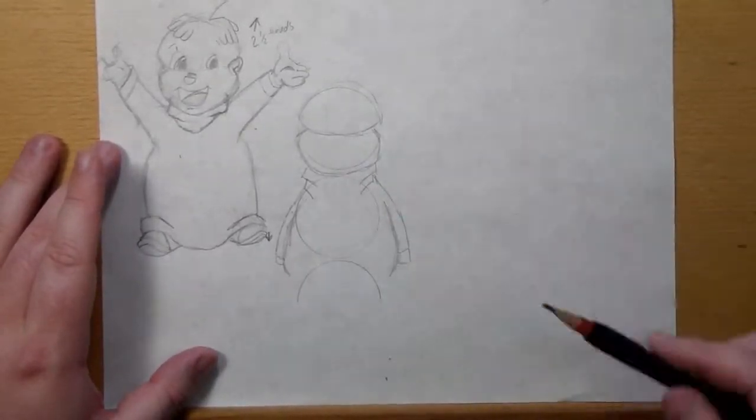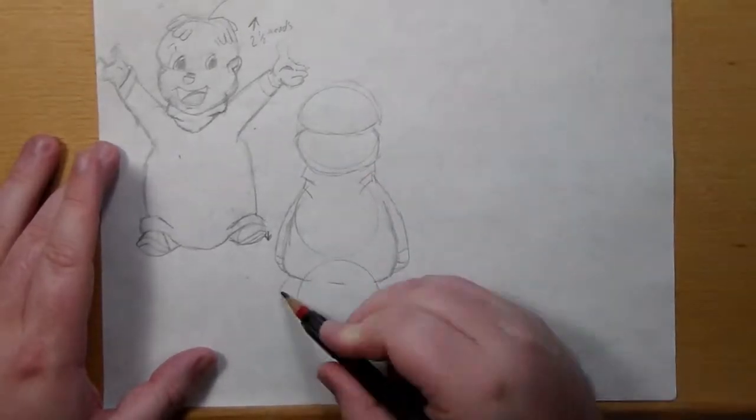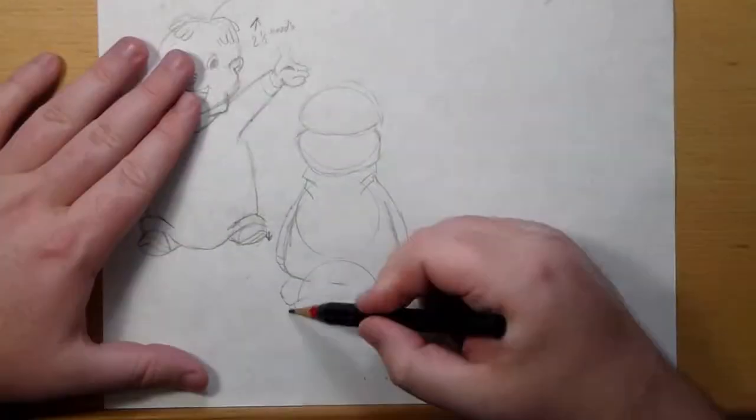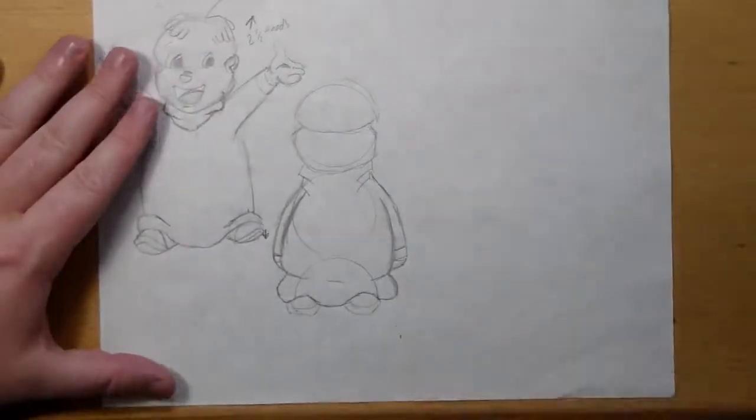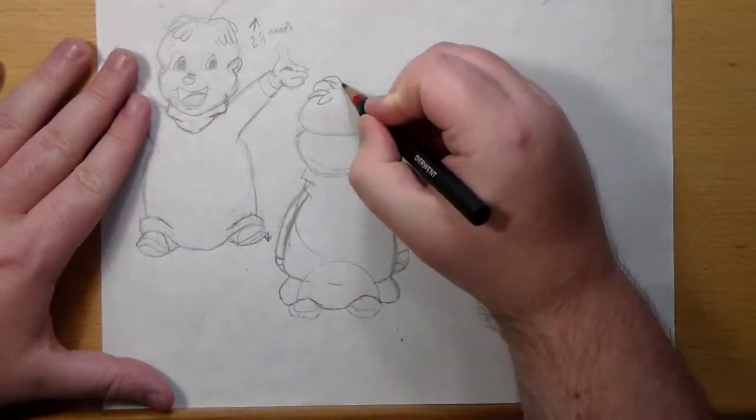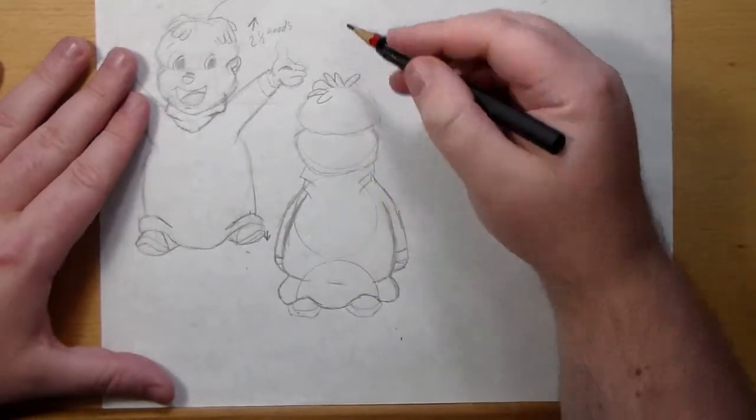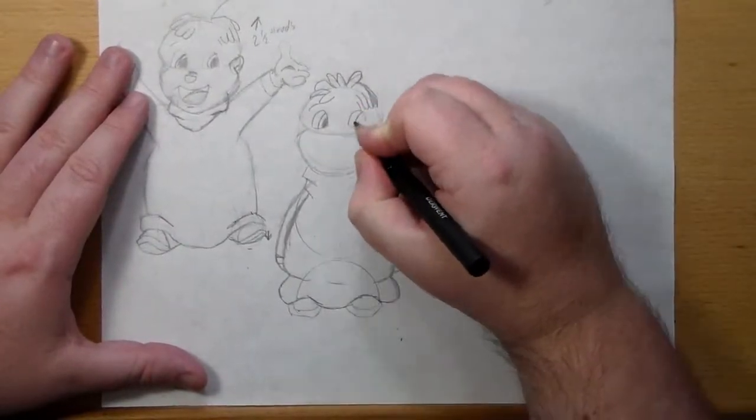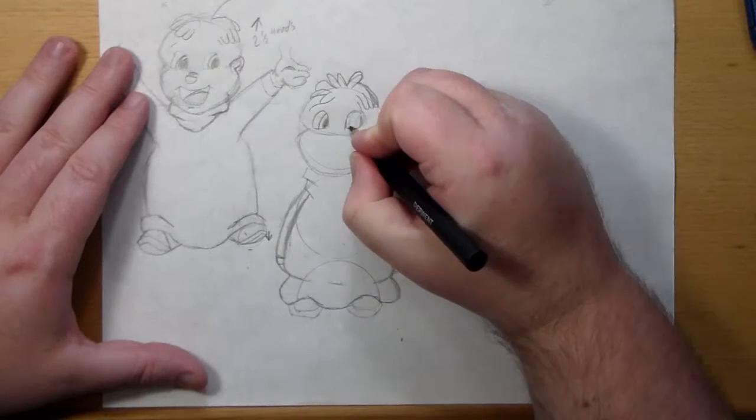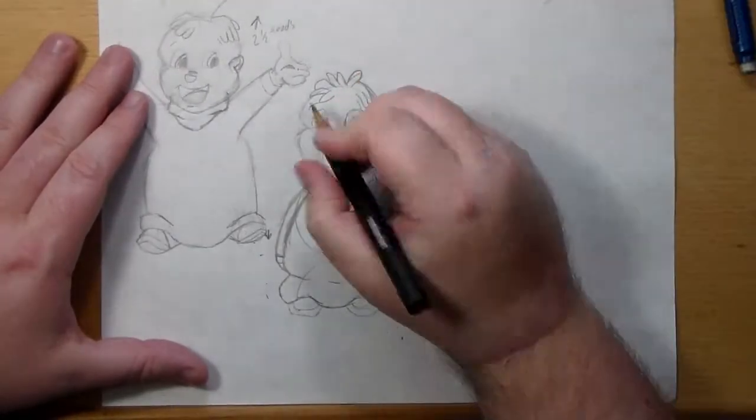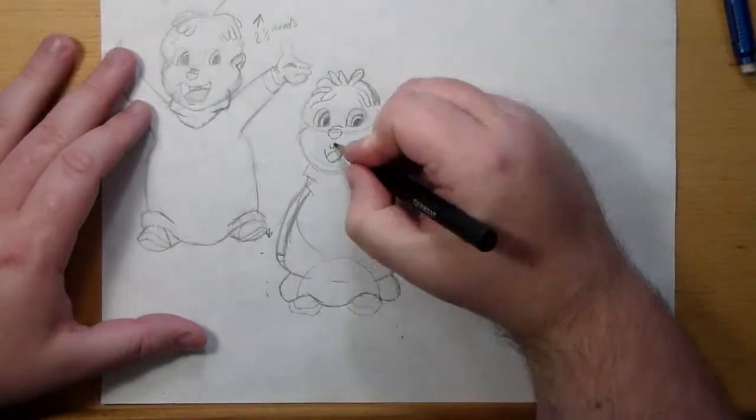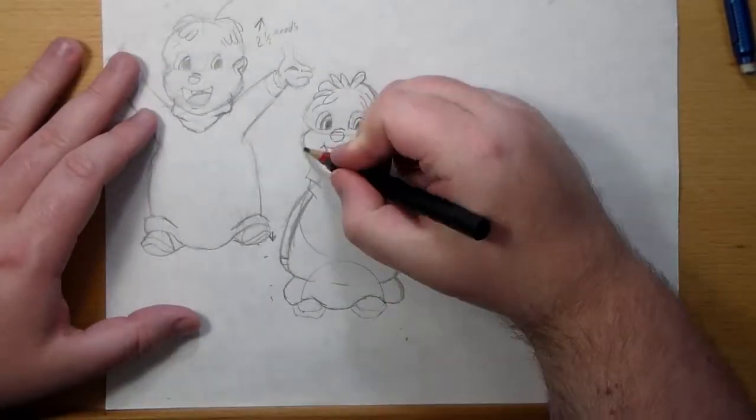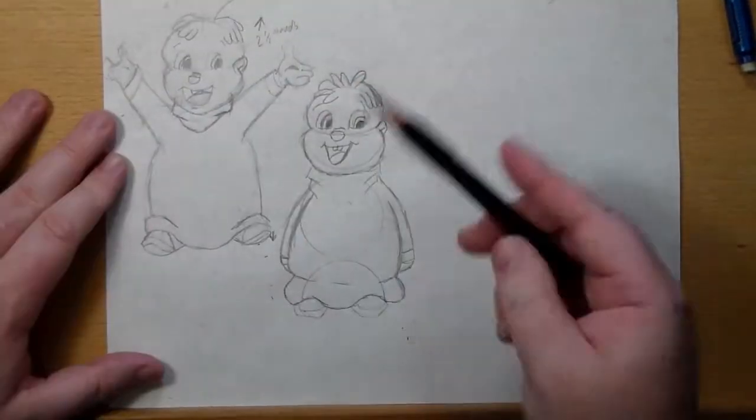One thing that helps me draw characters in whatever pose I want is mirror imaging the character reference in my head. This is why the third version that I draw is facing in a different direction. I take my favorites for each pose and create my own version by throwing in a little of my own style as well. I draw his hands interlocked behind his back because I've seen him like that in the cartoons a lot.